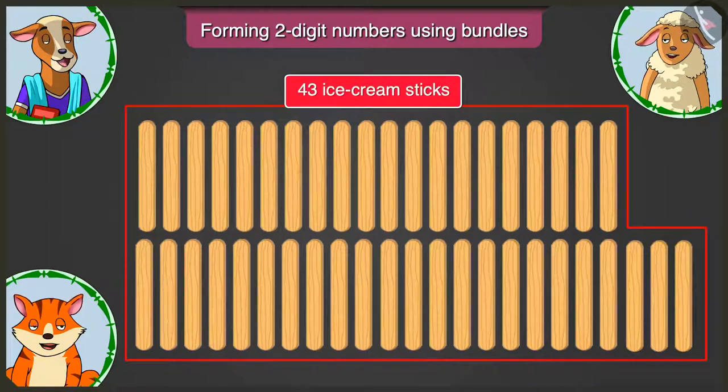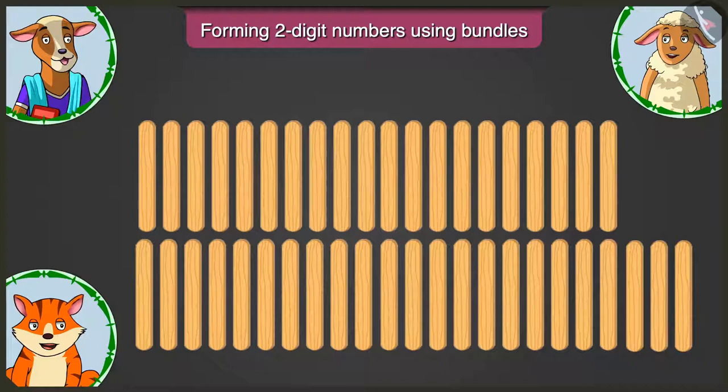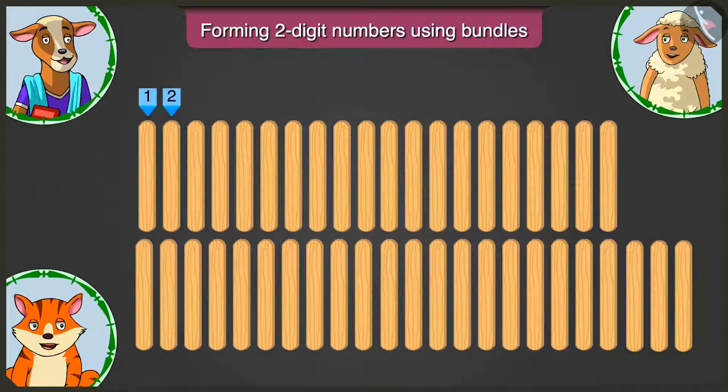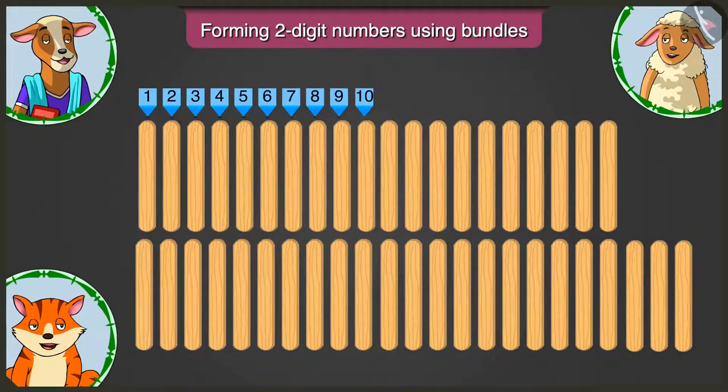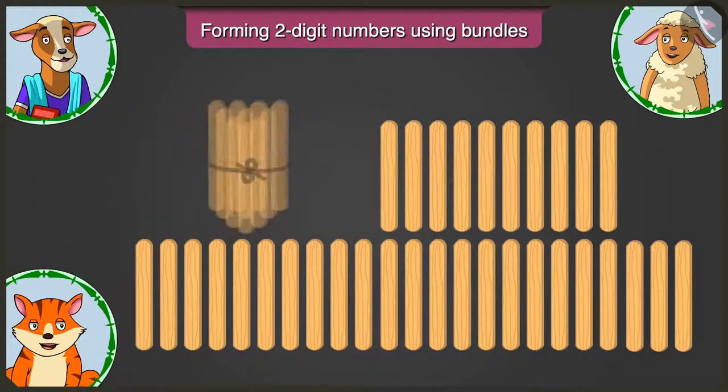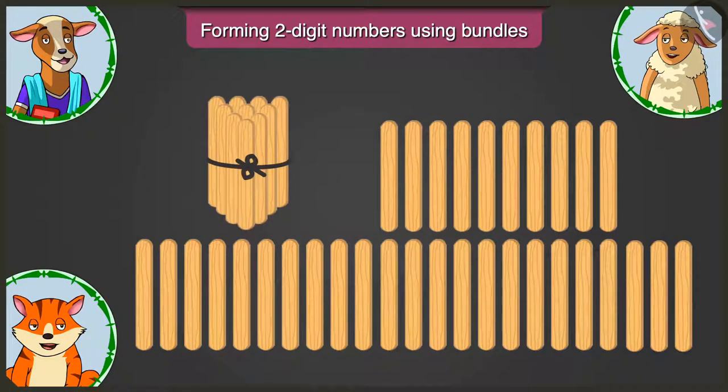There are 43 ice cream sticks. First of all, make one bundle of tens out of them. 1, 2, 3, 4, 5, 6, 7, 8, 9 and 10. Here is one bundle of tens.